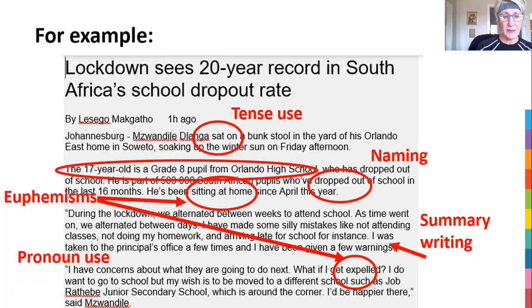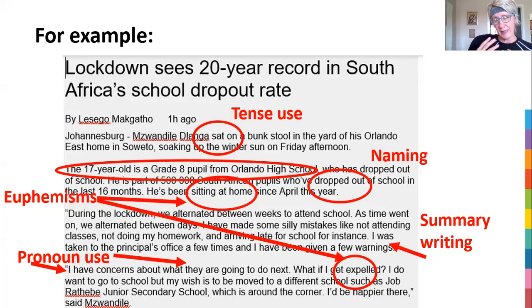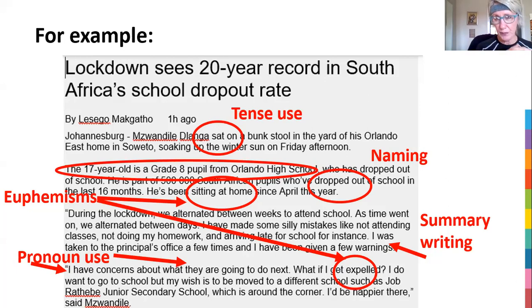The last thing is pronoun use. He says, 'I have concerns about what they are going to do next.' So he's worried about 'they' — who is 'they'? Is it the school? Is it society? Is it the government? And 'I' am separate from 'they,' so he's positioning himself as being separate from this body who's going to do things about getting him enrolled. He wants to go to another school. So that's one, two, three, four, five things done using the article as well.